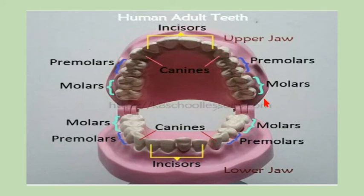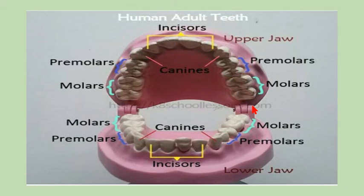Now, these are the types of teeth present in adults — the secondary or permanent teeth. They include incisors, canines, premolars, molars, and wisdom teeth. Wisdom teeth are basically the third molar; the first and second molars are regular molars. There are three molars on each side — first molar, second molar, and third molar — and the third molar is called the wisdom tooth.